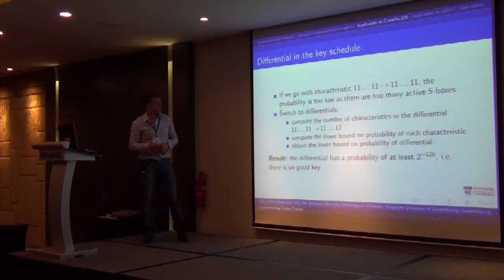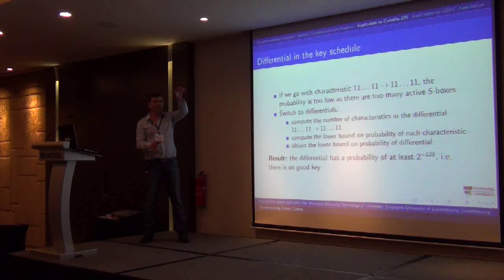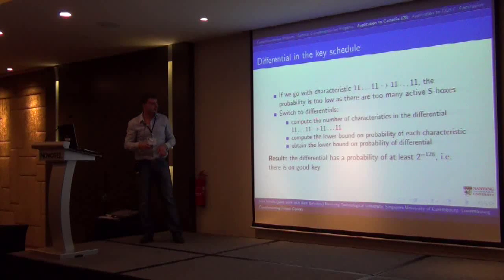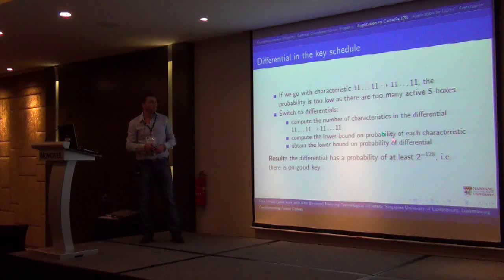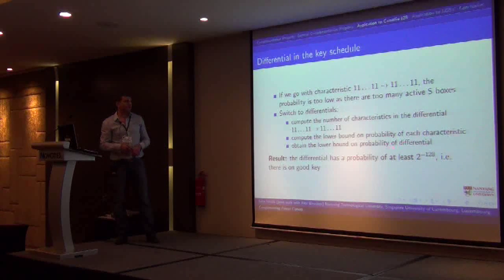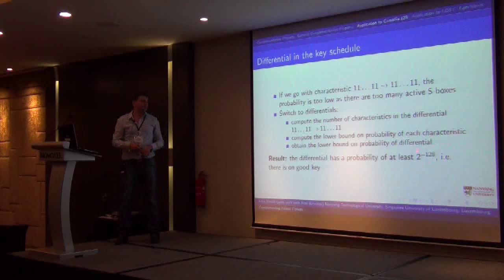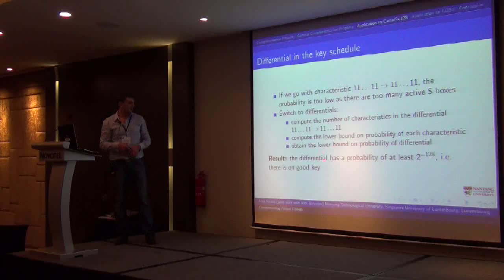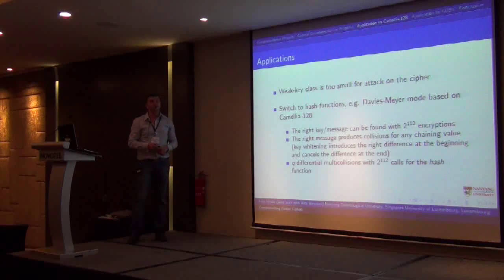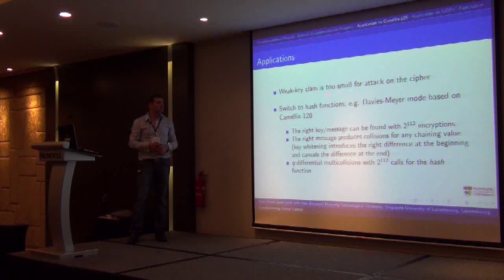We compute the number of characteristics that go from all-ones to all-ones: in the master key you have difference in all bits, and in the intermediate key KA you have difference in all bits. We try to find all such characteristics, find the lower bound on the probability of each, sum them up, and obtain a lower bound on the probability of this differential. We find that the probability of this differential is 2^{-128}, which is unsurprising. That's not actually our main result — the process we use to obtain this probability is used later in the analysis. With 2^{128} keys and differential probability 2^{-128}, there is expected to be one good key with this property. But this one good key is not enough to claim an attack on the cipher — the weak key class is too small.